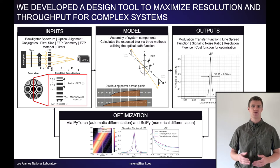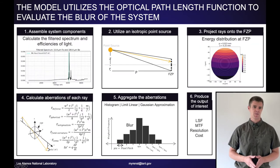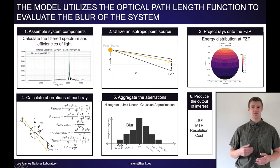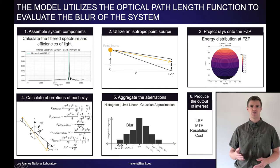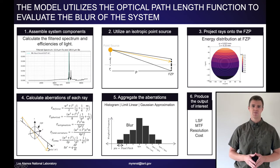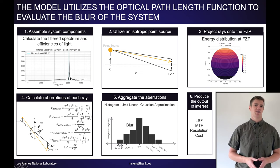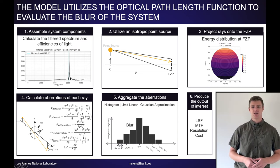Our optimizer utilizes the PyTorch neural network module to exploit the automatic differentiation and optimizer flexibilities of PyTorch. The model functions by first assembling all of the system components, relationships, and filtering the backlighter spectrum. Then we utilize the mathematics of an isotropic point source in order to project rays onto the FZP. Next, for every ray that strikes the FZP and for every energy in the spectrum, we calculate the blur. Then we aggregate all of this information in one of three ways.